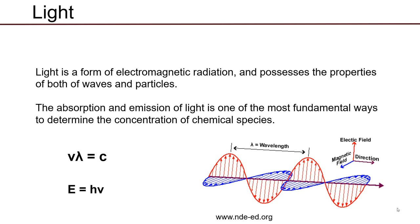The way the molecules in our eyes work allows us to perceive different colors of energy inside the visible range of the electromagnetic spectrum. As the discipline has grown, spectroscopists use common everyday terms like color and extend them to all aspects of the electromagnetic spectrum, even the wavelengths and energies that we can't see with our own eyes but can perceive with instrumentation.